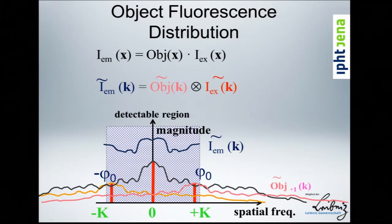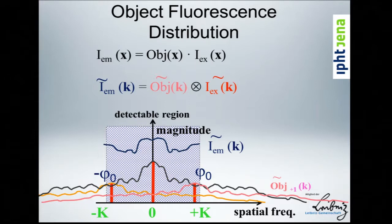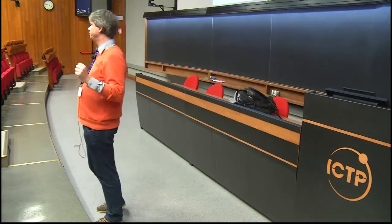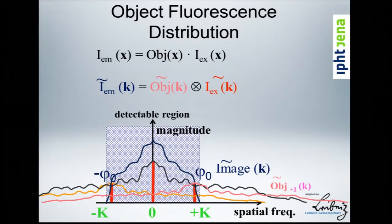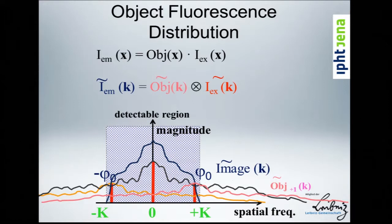What we measure is the emission pattern imaged through the microscope. In real space that means convolution; in Fourier space it means a simple multiplication by the optical transfer function — the Fourier transform of the point spread function. That transfer function roughly looks like a triangular function going down. So what we measure are mixed curves, and the trick is that moving the illumination pattern alters the relative complex-valued weight of these three components. With three measurements at one spatial frequency we can solve the equation system to disentangle the three components.